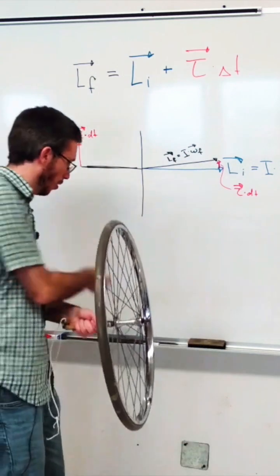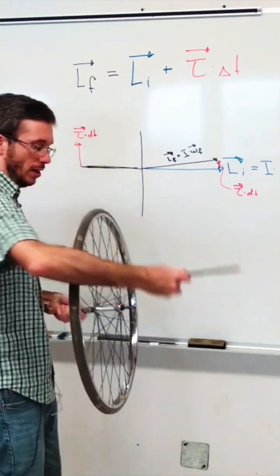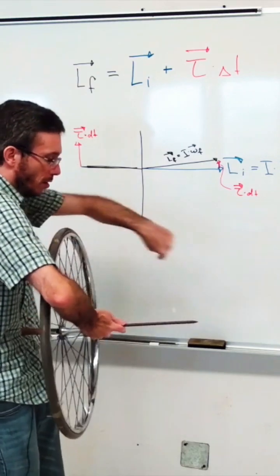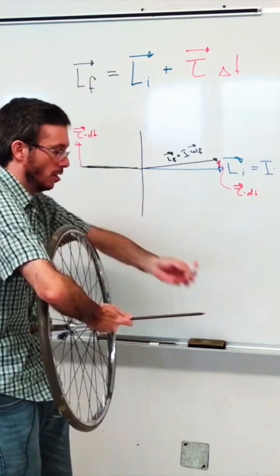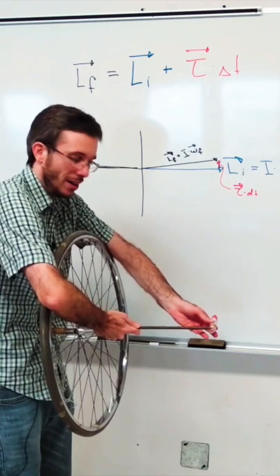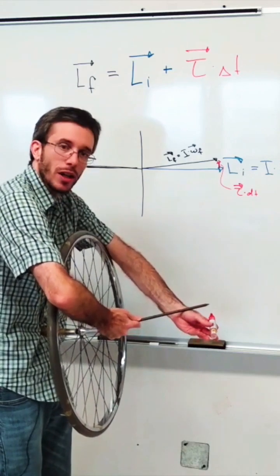So let's think about this with the wheel from the front view. My initial L points that way. Then I have a torque vector that adds going in that direction. That means my final L has to be in this direction.